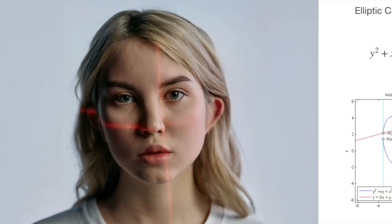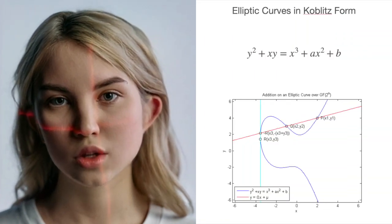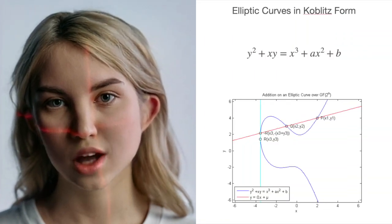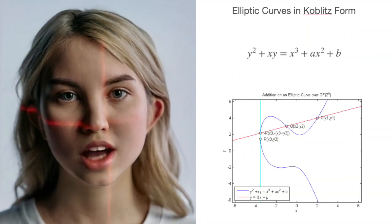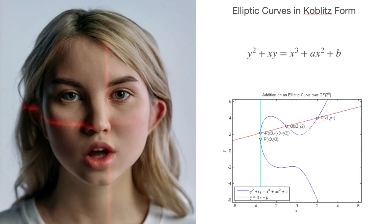Now, let's look at some variations of elliptic curves and their neutral element. Koblitz curves, for example, have the same point at infinity as Weierstrass curves. This is because Koblitz curves are a type of Weierstrass curve with a specific choice of parameters that make them easier to implement in hardware.